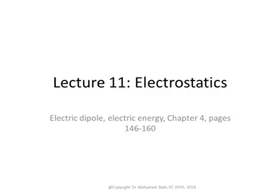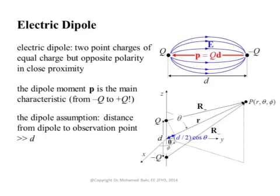Electric dipoles are extremely important because, as you'll see later, when we talk about polarization and how different materials react to electric field, we need to use this definition of electric dipole. An electric dipole, by definition, is given by two charges that are both very close to one another. We have a charge Q and a charge minus Q, separated by a very small distance D, usually in the atomic size. To handle such a dipole, we define a dipole moment as a vector pointing from the negative charge to the positive charge, with magnitude QD, where Q is the value of the positive charge and D is the separation between the two charges.